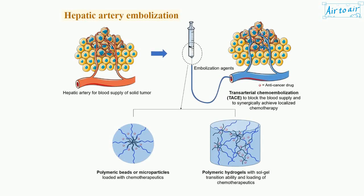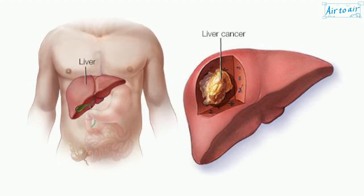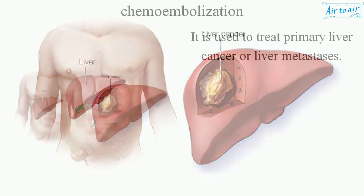Chemoembolization is a technique of injecting substances designed to decrease or stop tumor growth into the arteries that feed a tumor. Injected substances include chemotherapy medication along with particles that decrease the supply of oxygen and nutrients to the tumor.